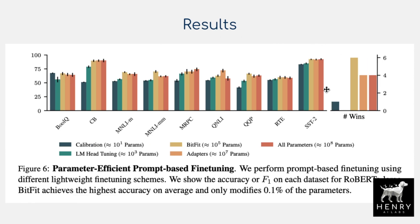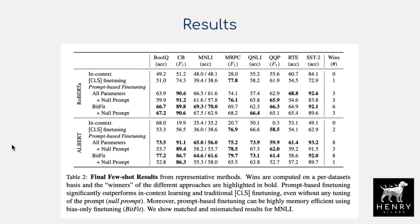This table shows the effect of stacking null prompting with parameter-efficient fine-tuning strategies: calibration, language model head tuning, BitFit (only bias parameters — performs best), and adapter layers, compared with fine-tuning all parameters. The magnitude of parameters being fine-tuned: all parameters ~10^8, adapter layers ~10^7, bias terms only ~10^5. Results across RoBERTa and ALBERT on GLUE benchmark tasks show null prompt with BitFit competitive with or better than full fine-tuning.